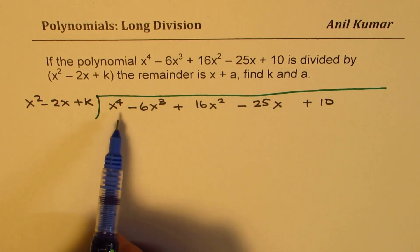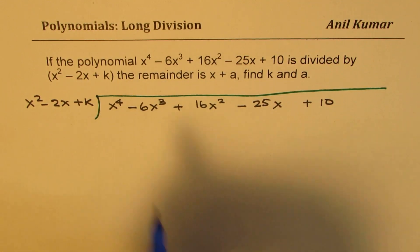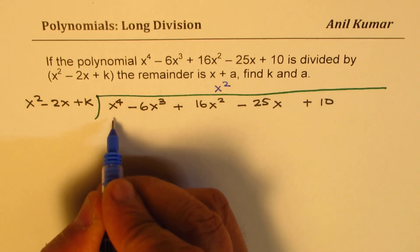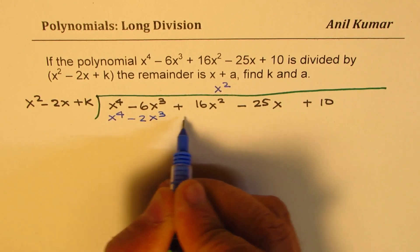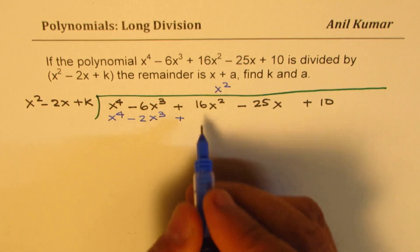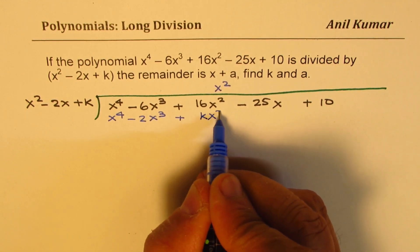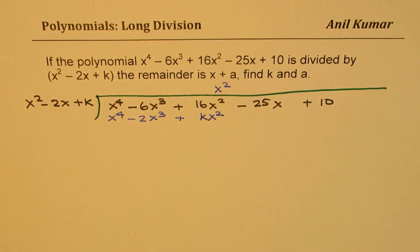Let's see how to divide. So I'll take three terms. First thing to multiply with x^2 we get x^4 - 2x^3 plus kx^2. Now when you take away what do you get?